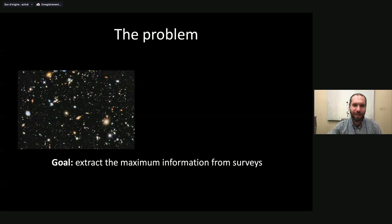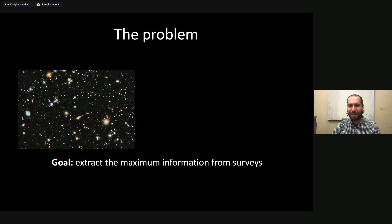So what is the problem? We're spending billions of dollars, euros, Swiss francs, yen — whatever currency you have — and we have this amazing data from coming surveys: Euclid, LSST, DESI, all these different surveys. Basically, right now I will say we are not really able to extract all the information that is in these surveys, because our theory predictions are not good enough to carry out this task.